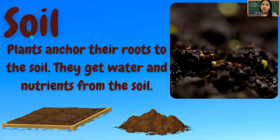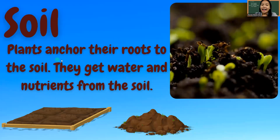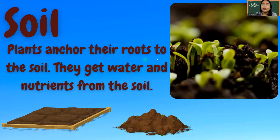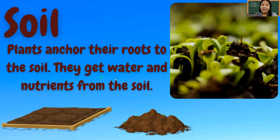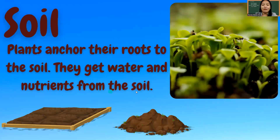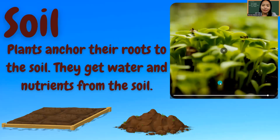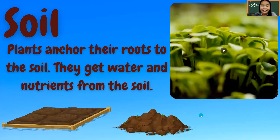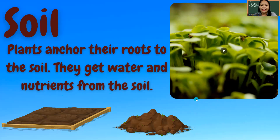First, we have soil. Plants anchor their roots to the soil. They get water and nutrients from the soil. Like these little bodies here — they are planted in the soil. Farmers have what we call a nursery. These are the places where seeds are planted to grow into a seedling, and then they will transfer them into their garden or in their farms.